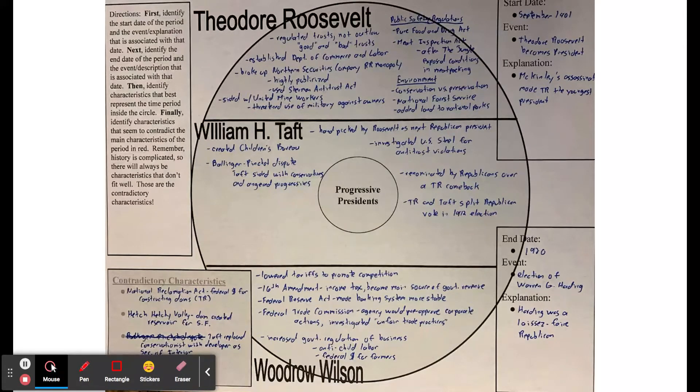He wanted to be more nuanced and careful about how you regulate trusts, but he did establish the Department of Commerce and the Department of Labor. Most famously, he initiated a lawsuit through the Justice Department where he broke up a railroad monopoly, the Northern Securities Railroad. This was highly publicized, a use of the Sherman Antitrust Act to break up this railroad monopoly in the Northwest. This is where he built his reputation as a trust buster.